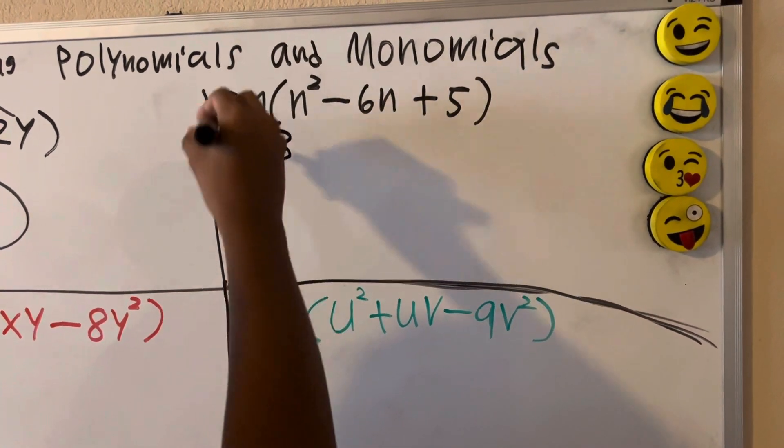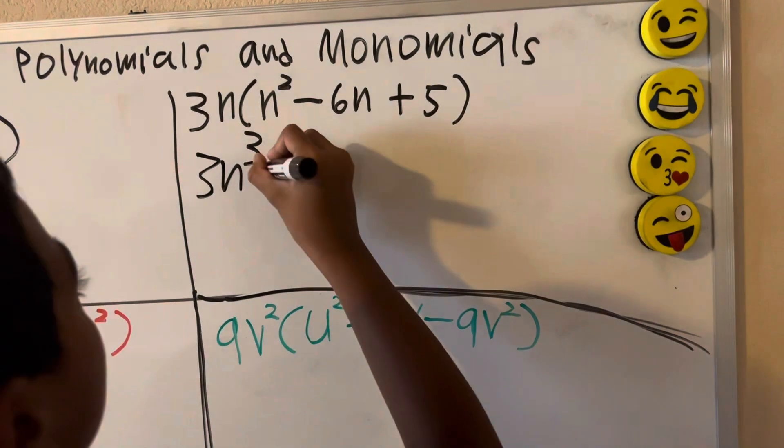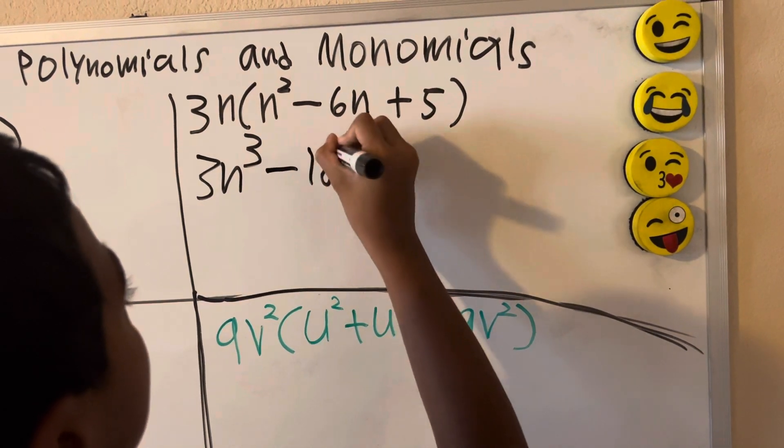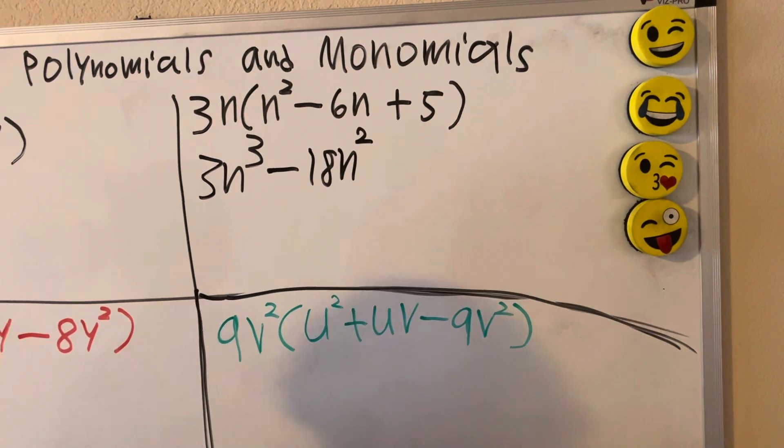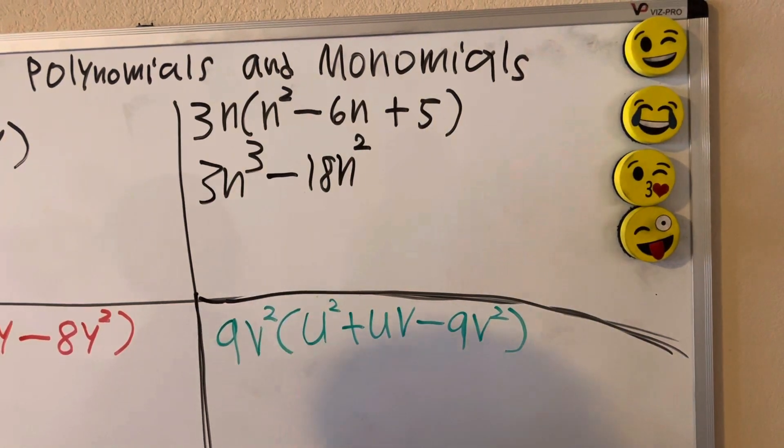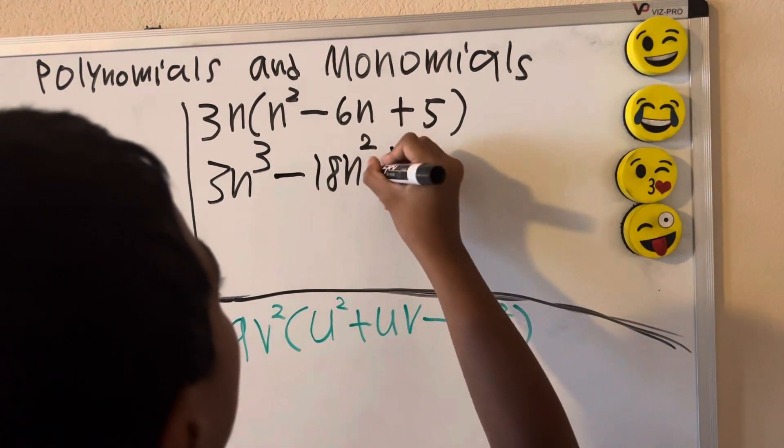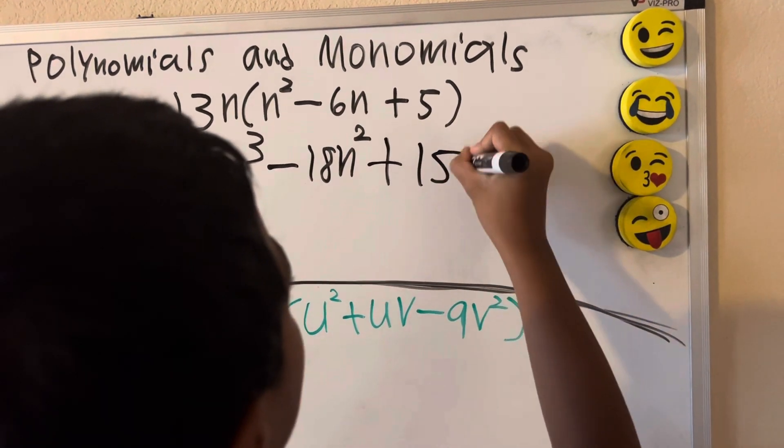Negative 6n times 3n is minus 18n squared. 5 times 3n is plus 15n.